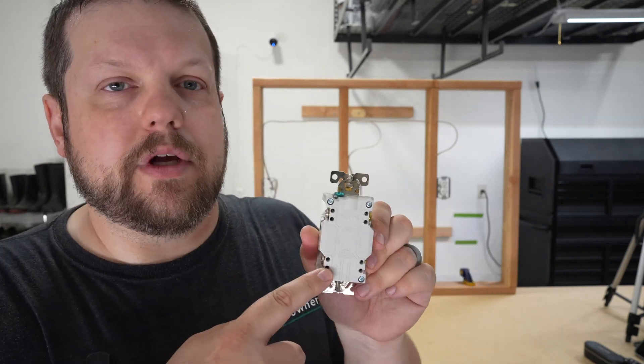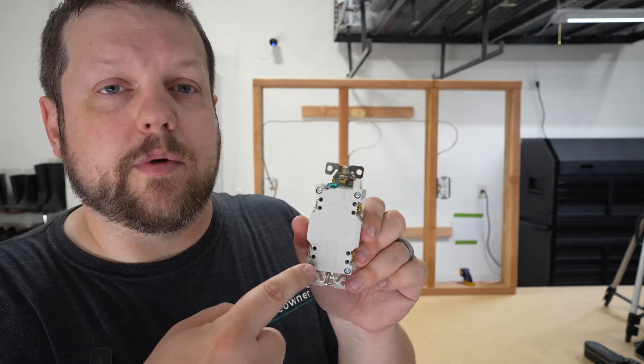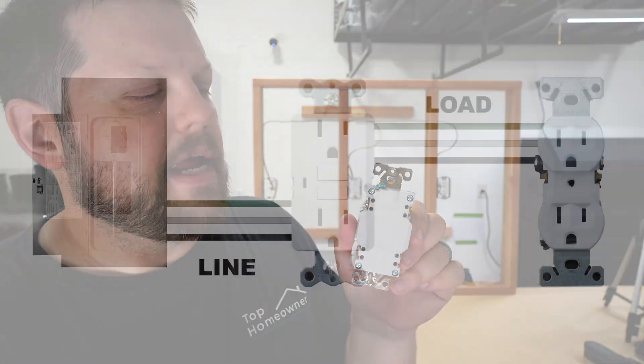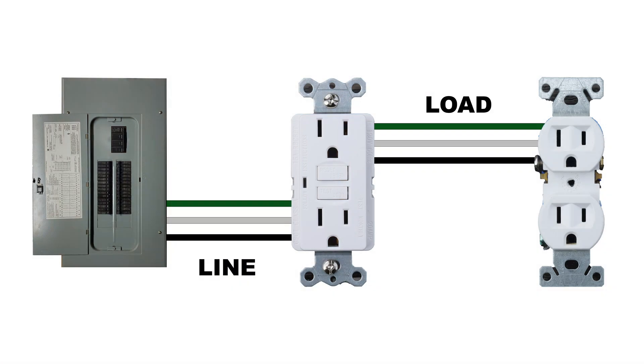The load terminal, as you can probably imagine, is what you would use to wire up your additional receptacles on that circuit, and the load terminal is what protects everything else. Something else that can be confusing is the line and load wires actually swap positions depending on where you are in the circuit. Let me explain what I mean by that.